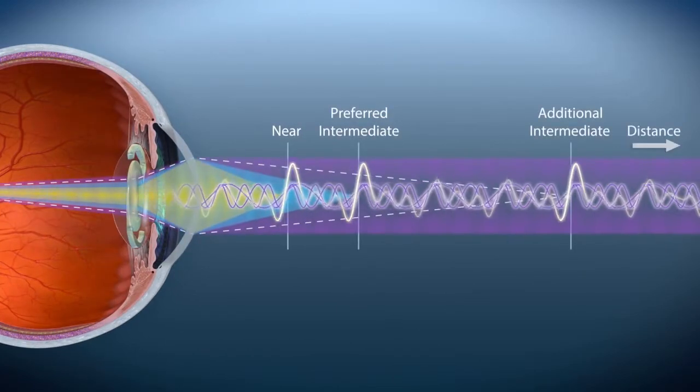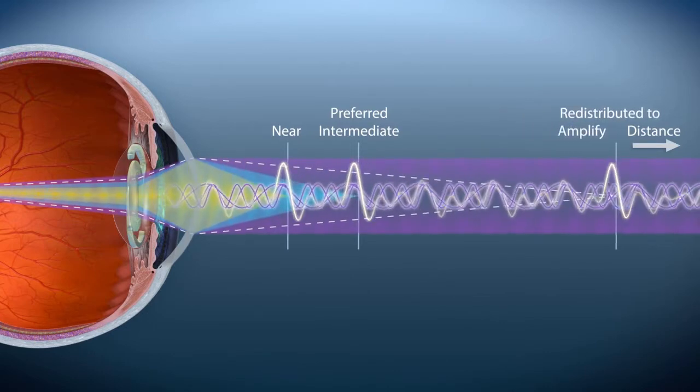To optimize performance for a full range of vision, the third focal point is redistributed, amplifying the distance focal point.